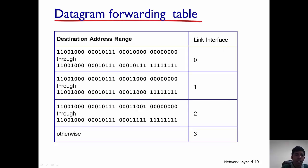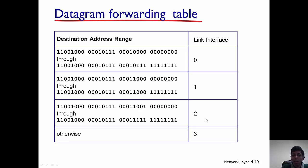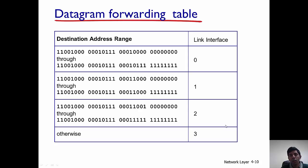The datagram forwarding table can look something like this. All addresses within a particular range, as specified by this example, are forwarded along link 0. Everything within another particular address range shown here is forwarded to link 1. Similarly, there is an address range for link 2. Any packet with a destination address falling outside these three ranges is forwarded along link interface 3.